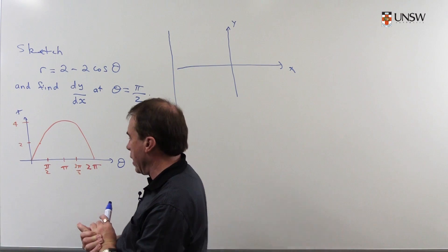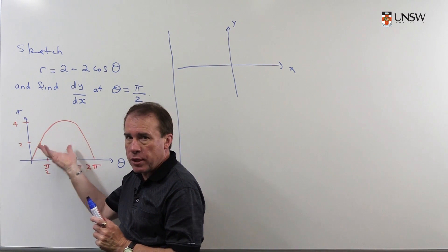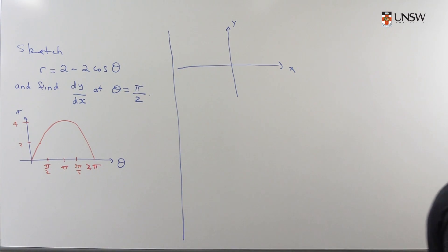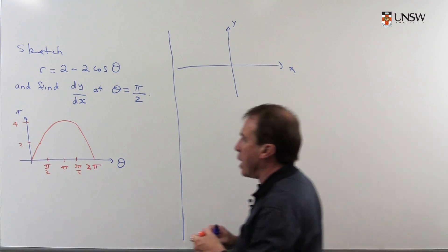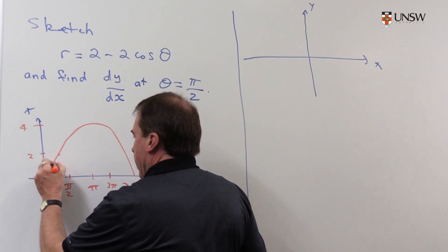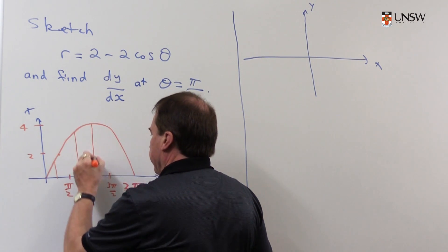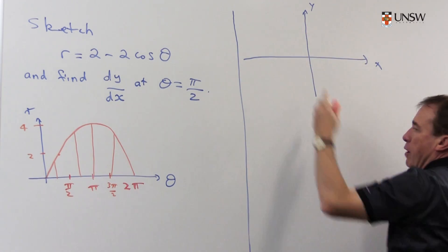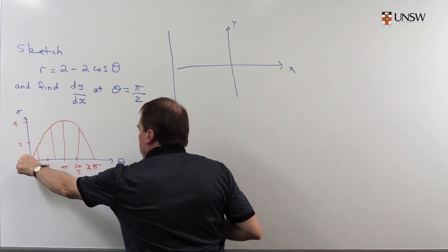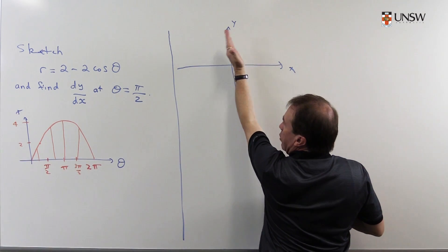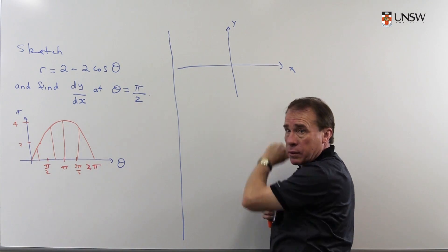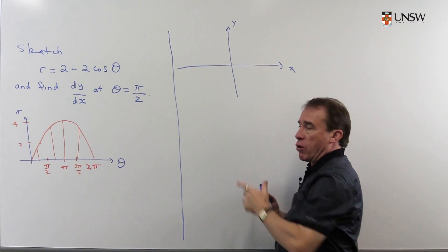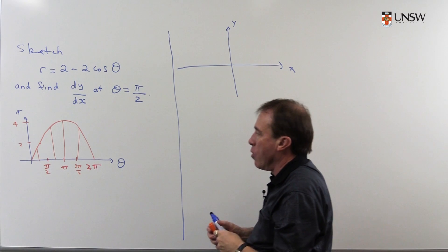Now I find that useful in drawing. I'm going to try and translate this picture across into the xy plane by remembering that the r values, the r is the distance out from the origin. As I move along the θ axis here, I'm rotating around, and as I move upwards in these heights, then I'm moving outwards from the origin.